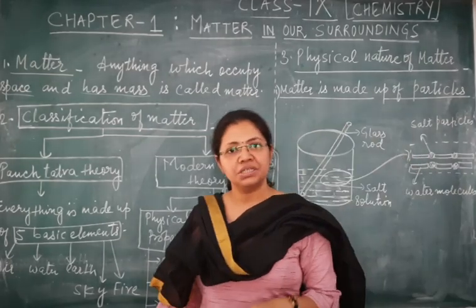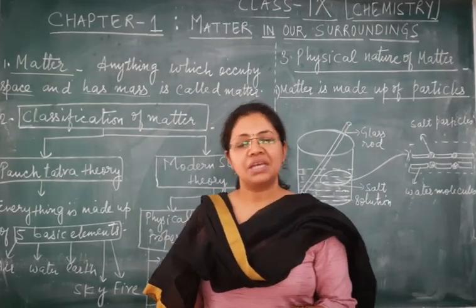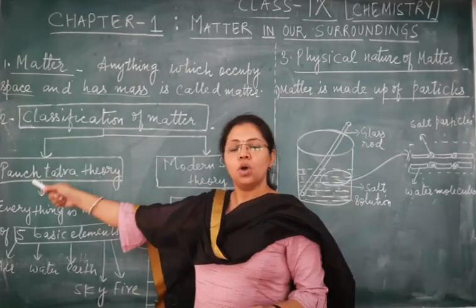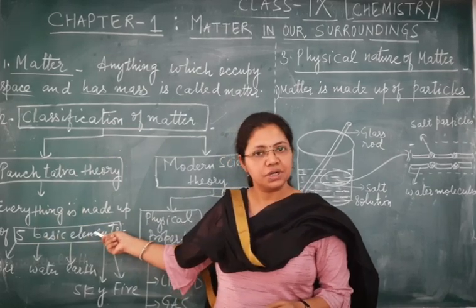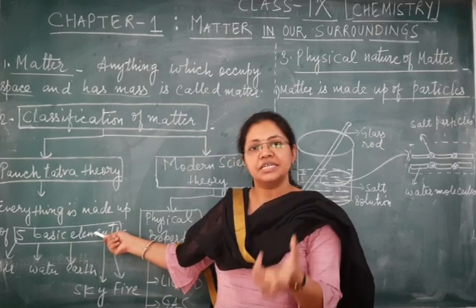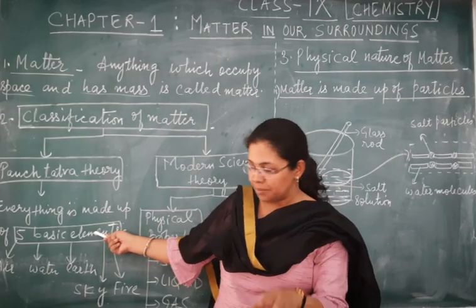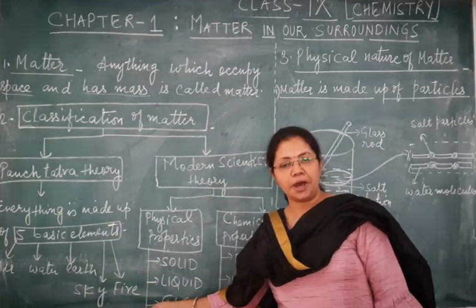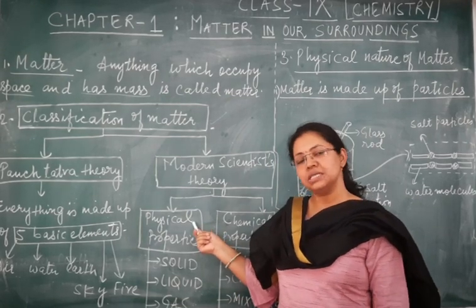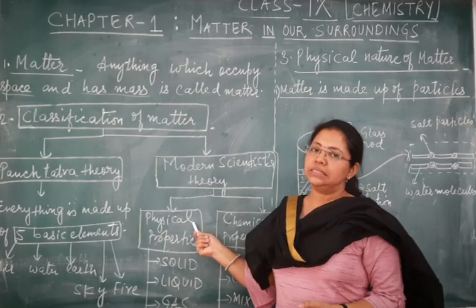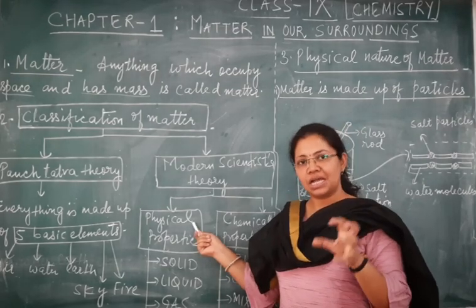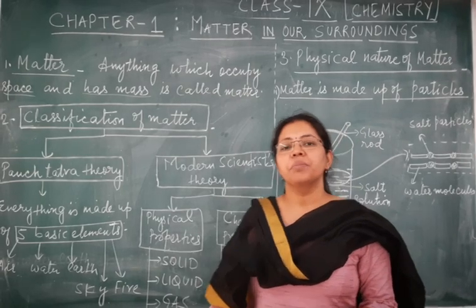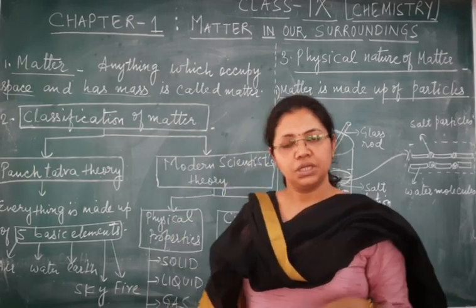So regarding classification of matter, we can classify matter in two ways. The first way is according to our ancient Indian philosophers, who said everything in this universe is made up of five basic elements: air, water, earth, sky, and fire. Another way of classifying matter is according to modern scientific theory, which classifies matter on the basis of its physical and chemical properties.